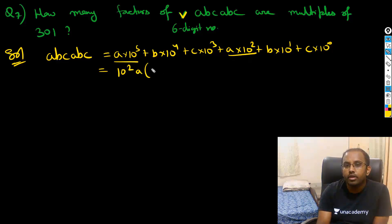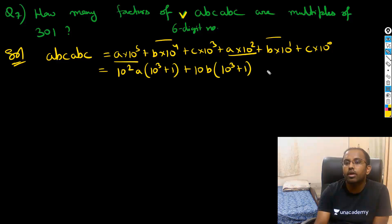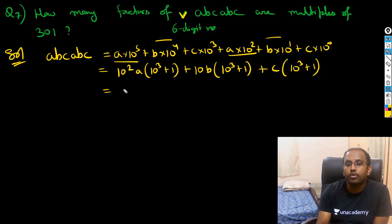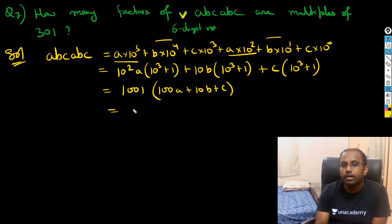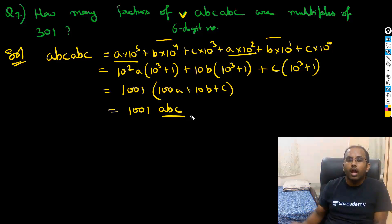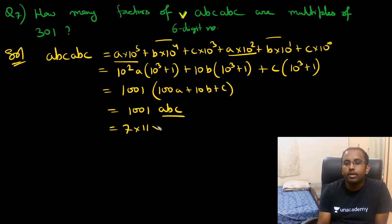Taking a common from the first and fourth terms gives a×10² as common, leaving (10³ + 1). Similarly, taking 10b common leaves (10³ + 1), and taking c common also leaves (10³ + 1). So we can factor out (10³ + 1), which is 1001, giving us 1001 × (100a + 10b + c), which is 1001 × abc.